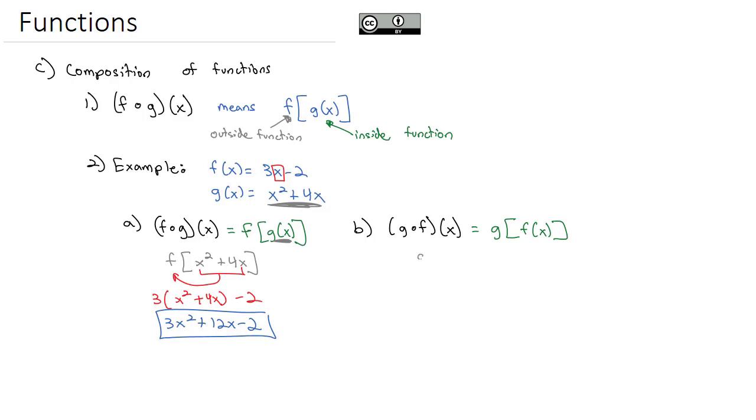What that means is we've got the g on the outside with the f function. Well, f is 3x minus 2. And that 3x minus 2 is going to go into the g function wherever we see an x. So we end up with stuff squared plus 4 times stuff. That stuff is the inside function, the f of x function, the 3x minus 2.